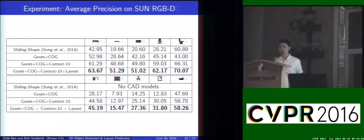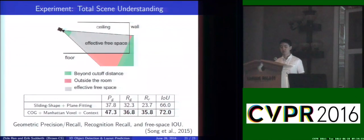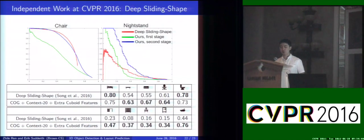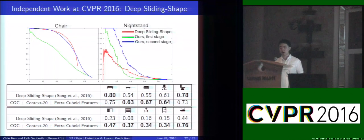Here are the average precision scores on an RGBD dataset. We outperformed the baseline Sliding Shape in all object categories, including those with no CAD models available. We also outperformed the baselines on the total scene understanding task. This year at CVPR, there is an independent work by Princeton's group called Deep Sliding Shape. By the time of our submission, our performance was already pretty competitive with theirs. After our submission, we made further changes by modeling more context and adding extra geometric features, and now our performance is actually a lot better — without using any deep learning features.